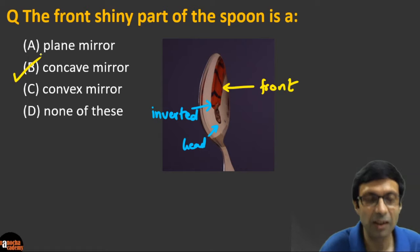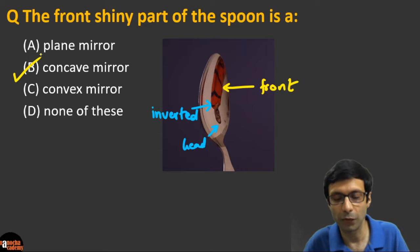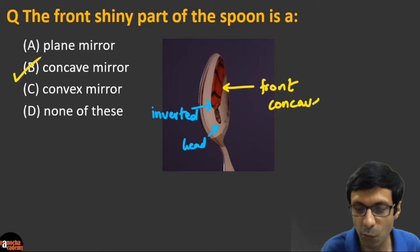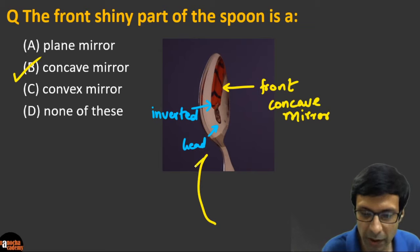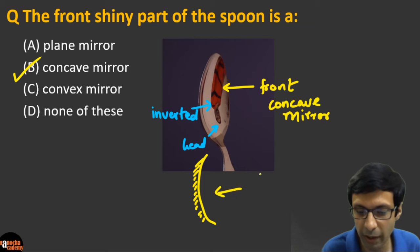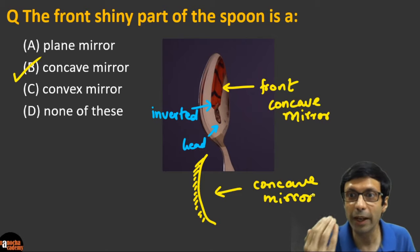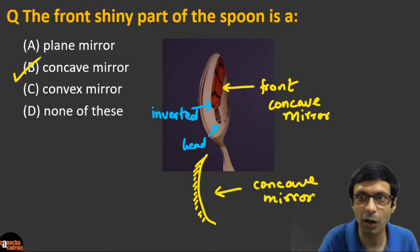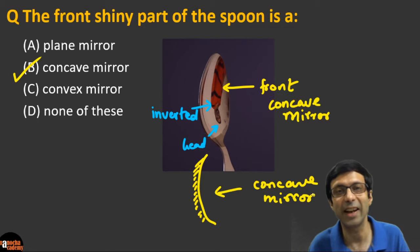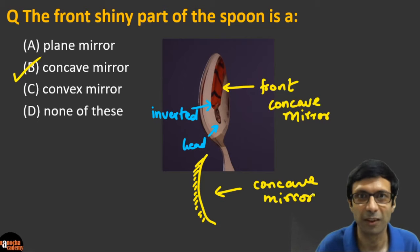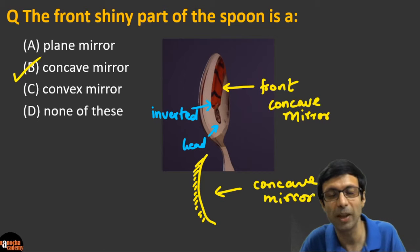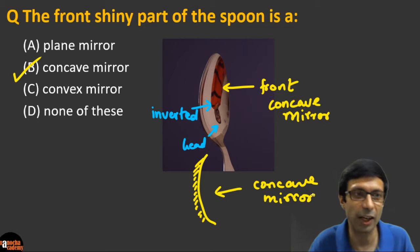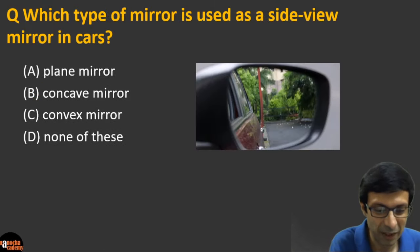The correct answer is (b) a concave mirror. The front part of the spoon is a concave mirror because the spoon curves inwards — like entering a cave, hence 'concave.' And the back portion of the shiny spoon is a convex mirror, since the spoon is silvered and shiny on both sides.